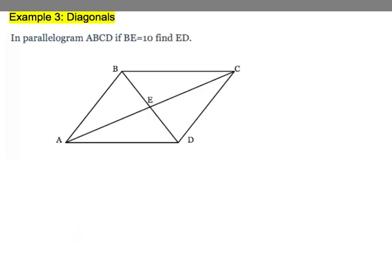Now moving into diagonals, we saw that diagonals bisect each other. That means that this is congruent to this, and this is congruent to this. And they say that in this parallelogram ABCD, BE is equal to 10.